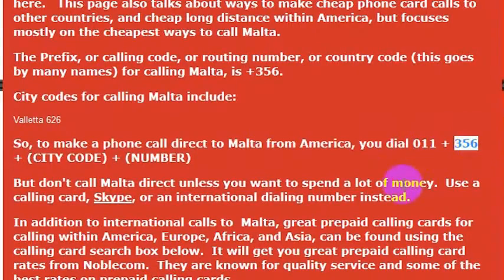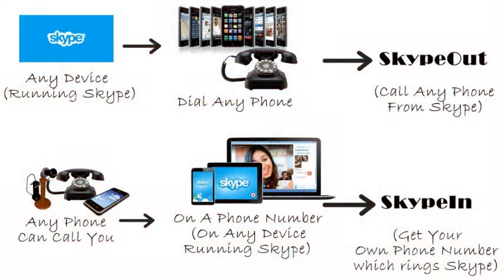Again, the country code for Malta is 356. But I wouldn't really recommend calling direct — your phone company will charge you a lot of money. If you want to call a phone number, I really recommend using Skype. We detail how to make free and low cost calls using Skype in other videos.